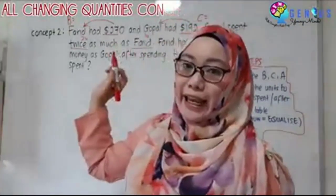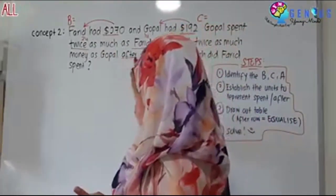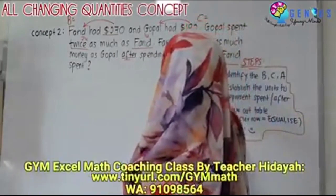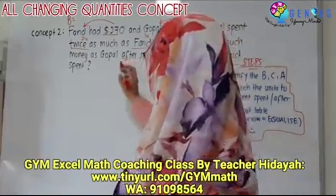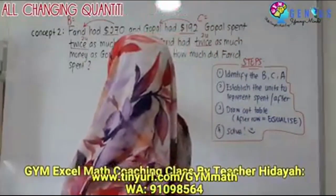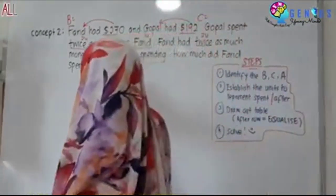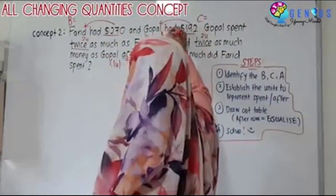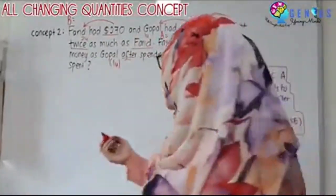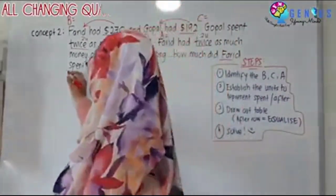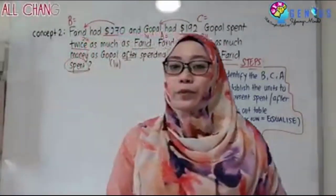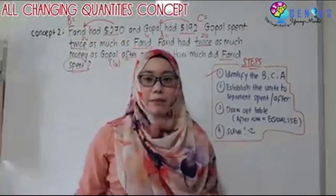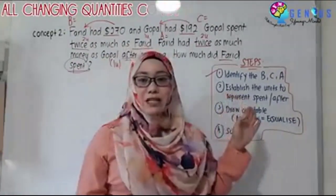The full stop indicates this is my after. Also, the phrase 'after spending' tells me this is my after. Farid had twice — so this one is two units — as much money as Gopal after spending, which means Gopal now has one unit after spending. So this sentence is my after. How much did Farid spend? That is what I want to find out.